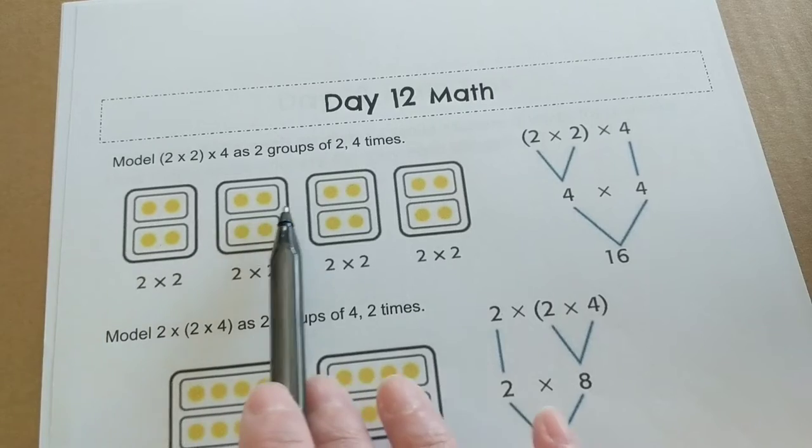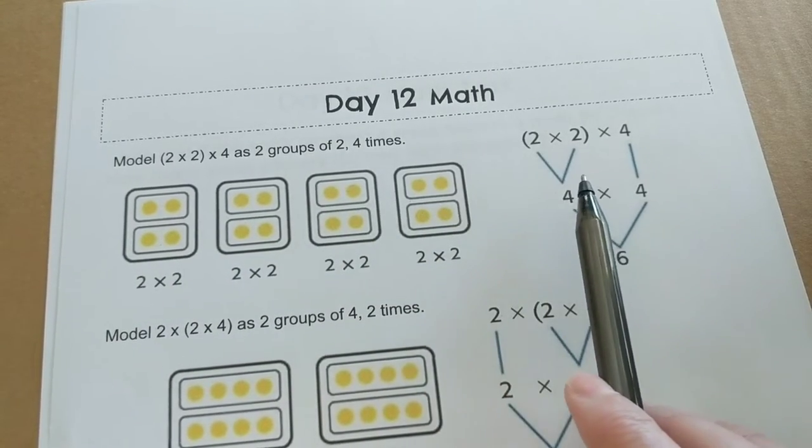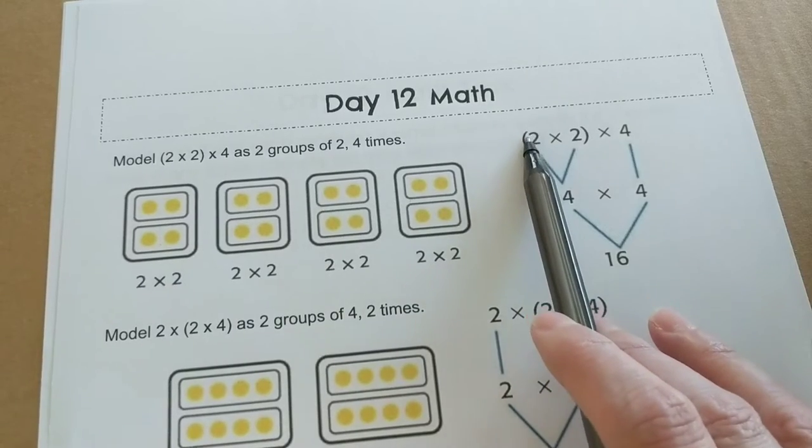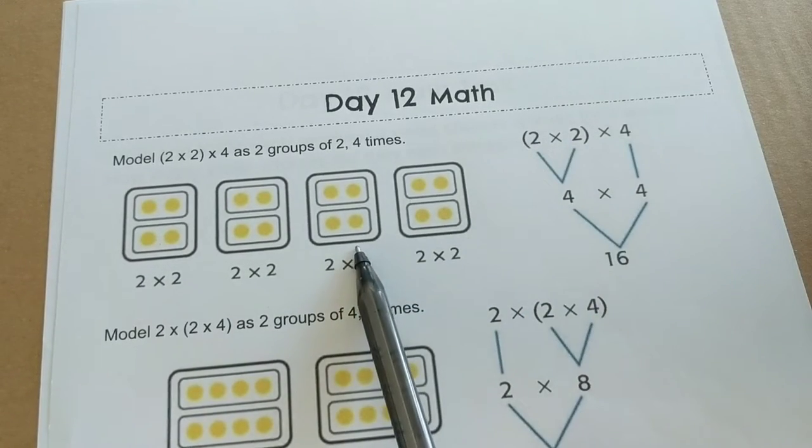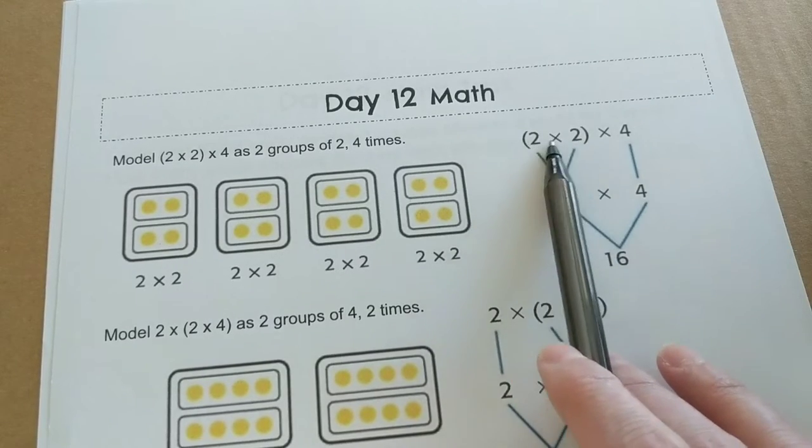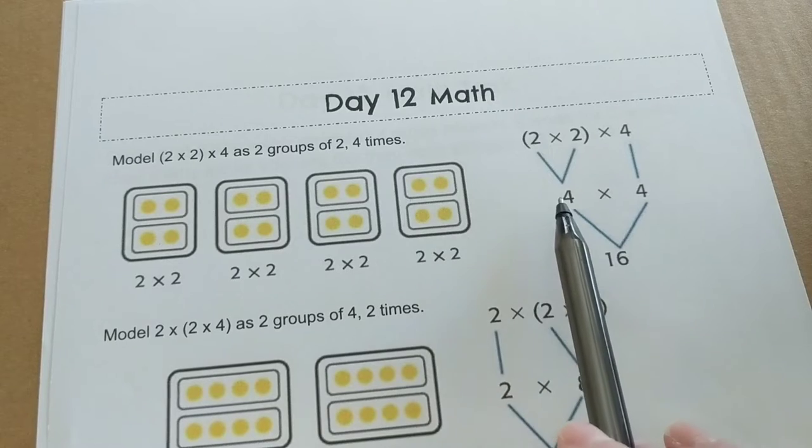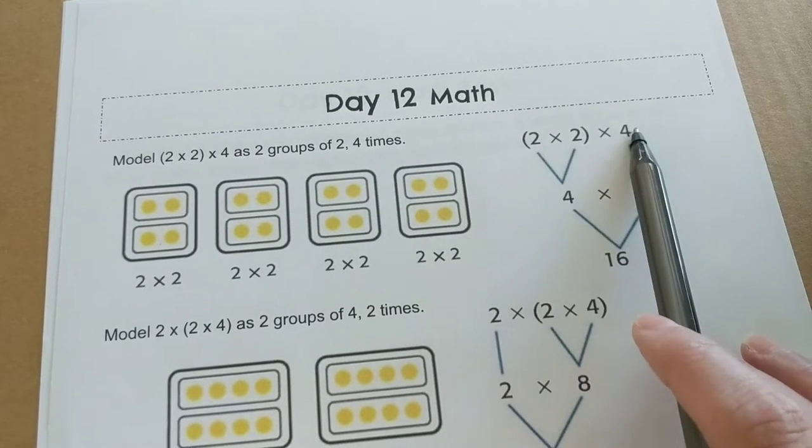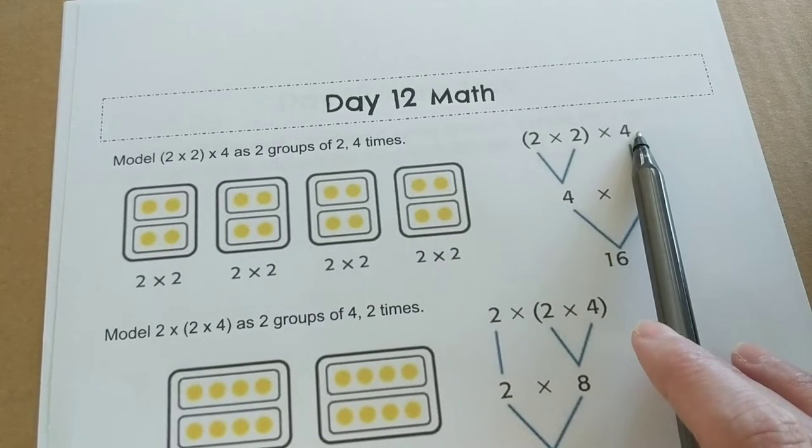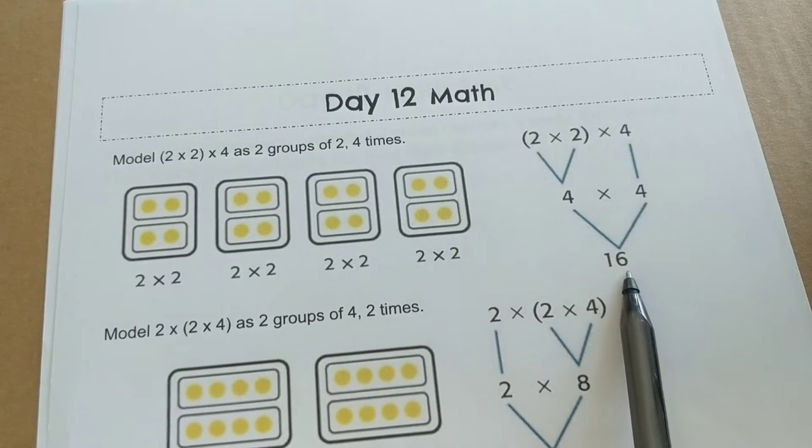So this will be four plus four plus four plus four. Another way of doing that is showing it with just the parentheses and not a picture. You would multiply whatever you have in parentheses. So the two times two, you decide which one's easier for you to multiply first. And then four times four, you bring down that four, is 16.